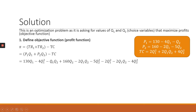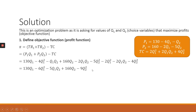Substituting back from the given information, our profit function has to be a function of Q1 and Q2, so we multiply the prices by the quantities and subtract the total cost function. If you reduce the equation correctly, the profit function equals 130Q1 − 6Q1² − 5Q1Q2 + 160Q2 − 9Q2².